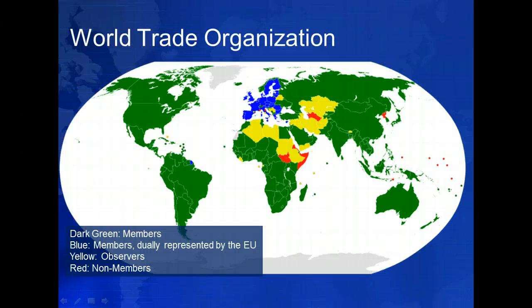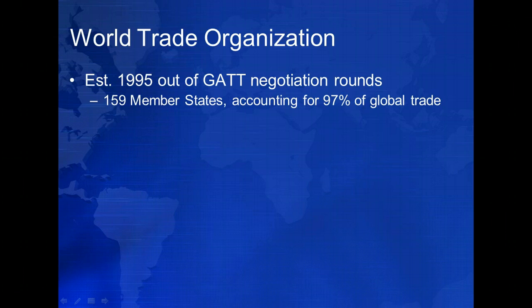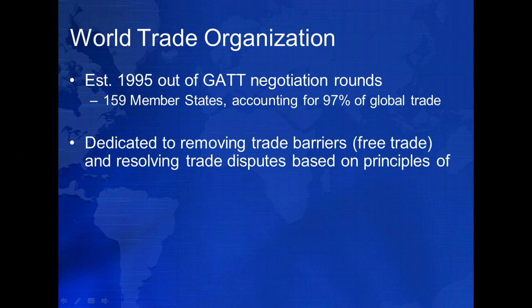The World Trade Organization was established in 1995 and today has 159 members, which collectively account for more than 97% of the world's total trade. Broadly speaking, the WTO's mission is to liberalize international trade and reduce trade barriers. In the short run, it focuses on converting subsidies and quotas to tariffs and then negotiating reductions in the level of those tariffs. WTO member states commit themselves to remove trade barriers and resolve trade disputes based on three broad principles: first, the principle of economic liberalism, which we've discussed previously.